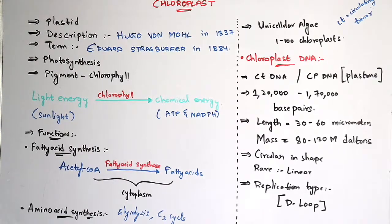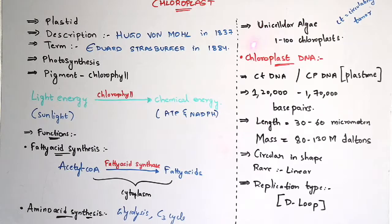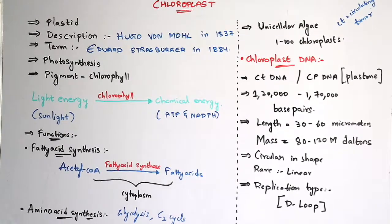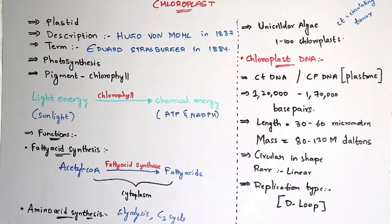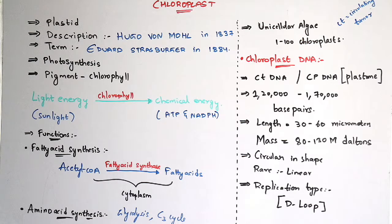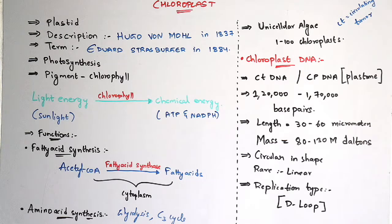In unicellular algae, 1 to 100 chloroplasts are mainly present within a leaf. For example, if you take rice, 75 chloroplasts are mainly present according to research.